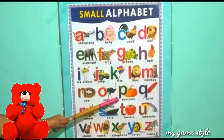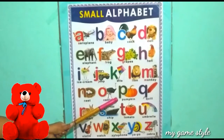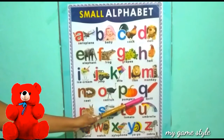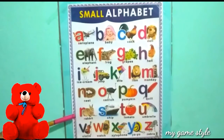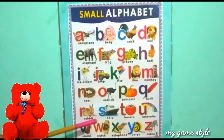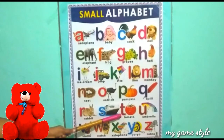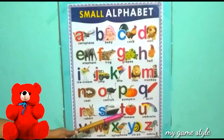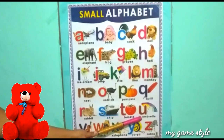P for Pumpkin, Q for Quill, R for Rabbit, S for Sheep, T for Tomato, U for Umbrella.